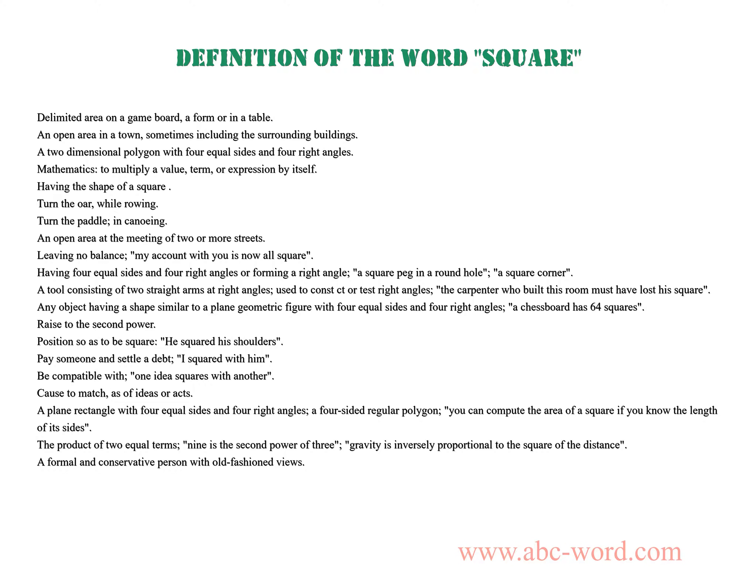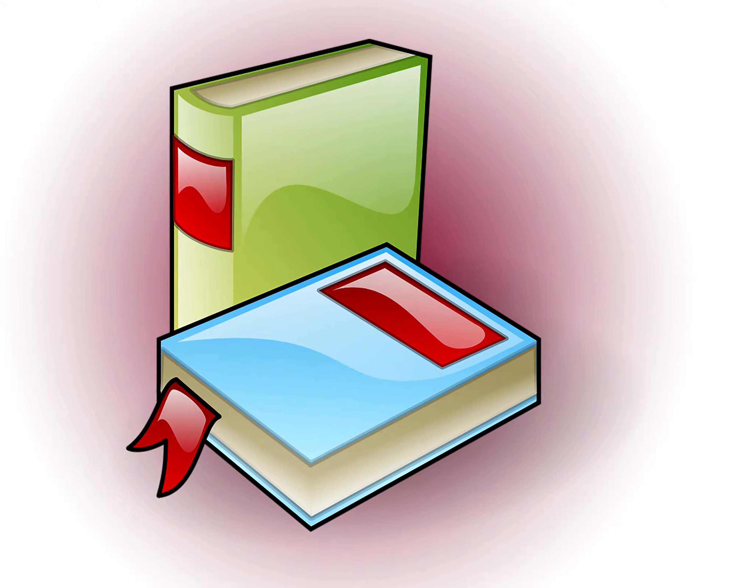Be compatible with — one idea squares with another. Cost to match, as if ideas or acts. A plain rectangle with four equal sides and four right angles, a four-sided regular polygon — you can compute the area of a square if you know the length of its sides. The product of two equal terms — nine is the second power of three; gravity is inversely proportional to the square of mass.